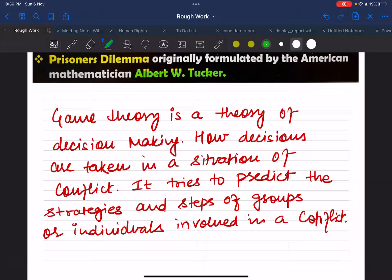Game theory is basically applied on decision making. If you actually see international politics, a lot of time state actors are just playing an important role in implementing decisions. How decisions are taken in a situation of conflict, it tries to predict the strategies and steps of groups or individuals involved in a conflict. This is basically what game theory does - it predicts the next moves, strategies, and creates the whole scenario.